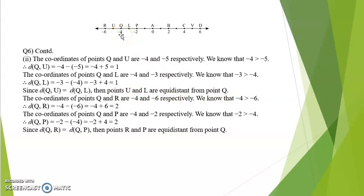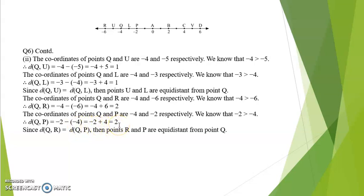Another set: Q and R with coordinates minus 4 and minus 6. Since minus 4 is greater than minus 6, distance QR is minus 4 minus minus 6, equal to minus 4 plus 6, which is 2. For Q and P, coordinates are minus 4 and minus 2. Since minus 2 is greater than minus 4, distance QP is minus 2 minus of minus 4, equal to minus 2 plus 4, which is 2. Since distances are equal, points R and P are equidistant from Q. This is all for now; we will continue in the next video.